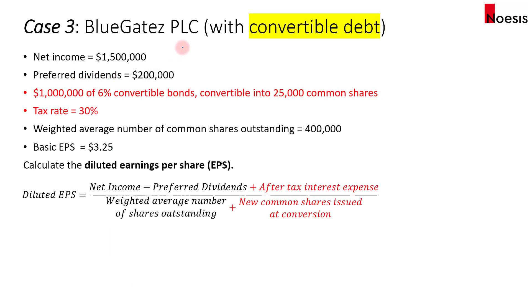In case three, we will assume that Blue Gates has convertible debt outstanding, and there are no longer any convertible preferred shares — just plain vanilla preferred shares where the preferred dividends are $200,000. For the convertible debt, there is $1 million of 6% convertible bonds, and the bonds are convertible into 25,000 common shares. The tax rate is 30%. The weighted average number of shares outstanding remains 400,000, and the basic EPS is $3.25. We'll now calculate the diluted EPS for this convertible debt.